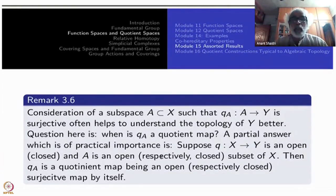For example, of practical importance, suppose you have an open quotient map or a closed quotient map. Then restricting it to a closed open subspace or a closed space will continue to be open map as well as a closed map, whichever the case may be.